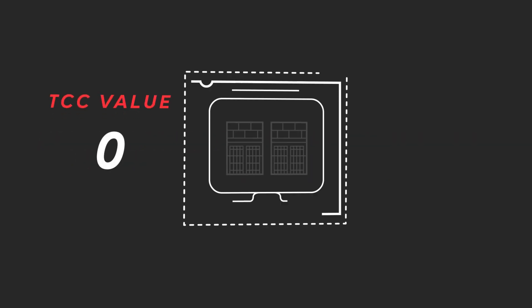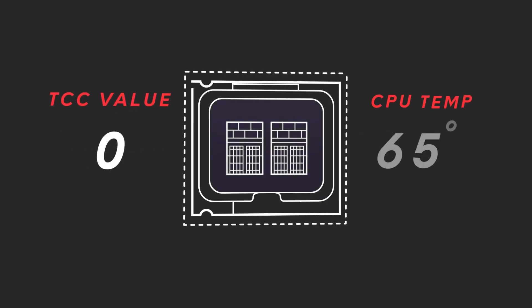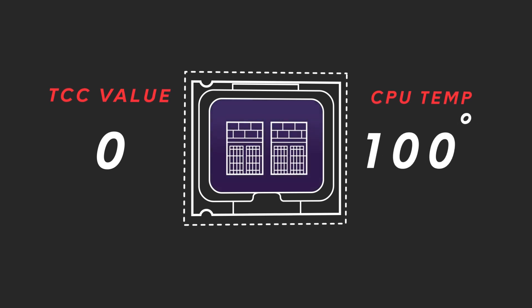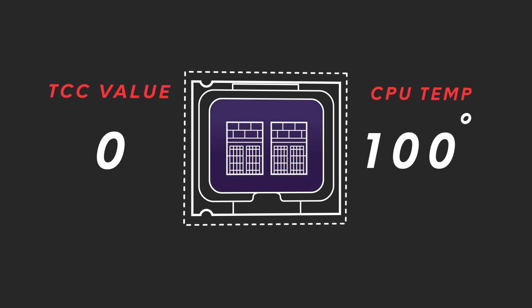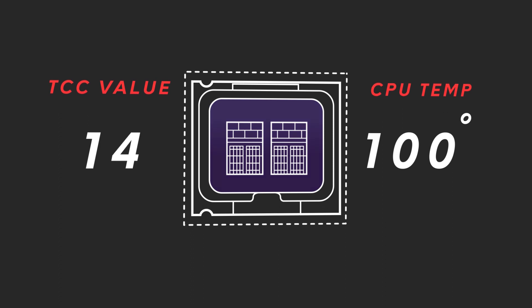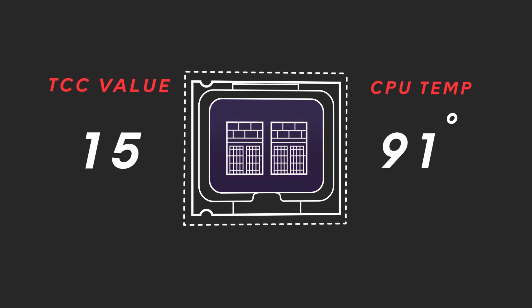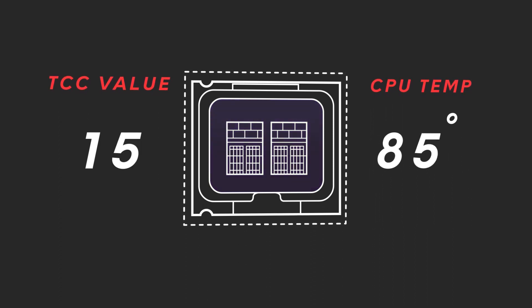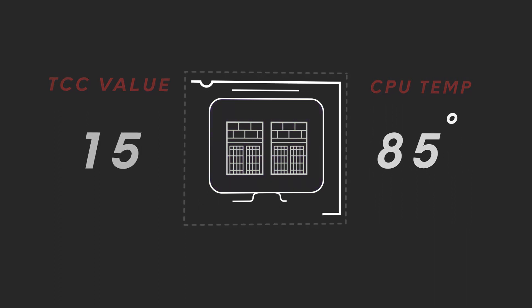If the TCC Offset Value is 0, then the max CPU temperature will be 100 degrees Celsius. If the TCC Offset Value is 15, then the max CPU temperature will be 85 degrees Celsius.